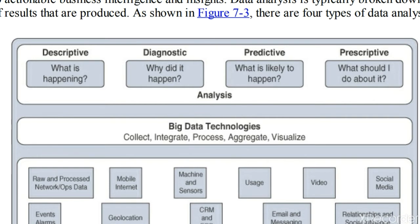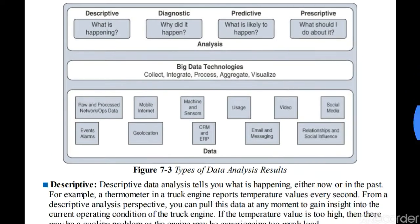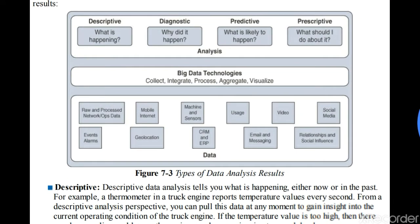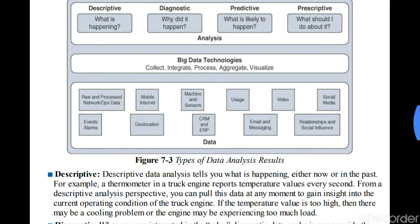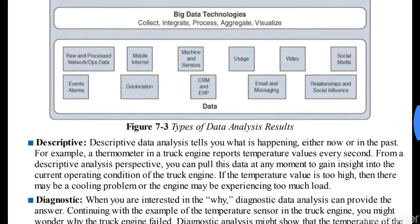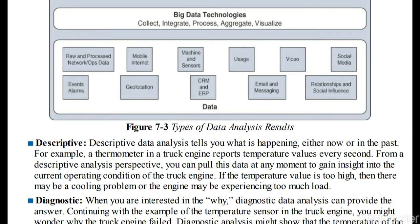First is descriptive. As you can see in the diagram, descriptive analysis tells you what is happening, either at the present state or in the past. They have given one example: a thermometer in a truck engine reports temperature values every second.